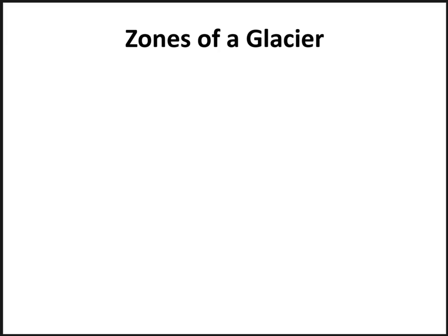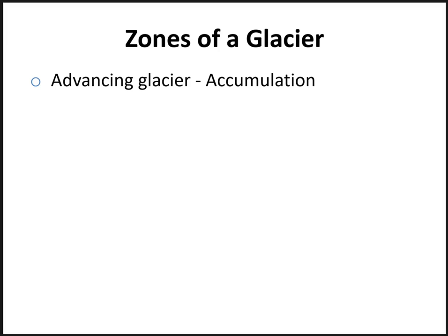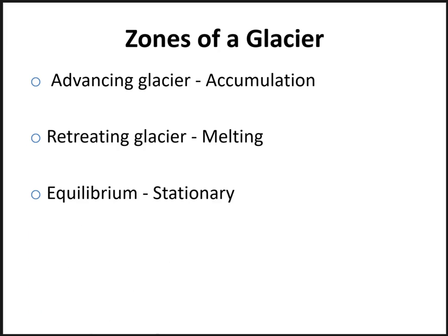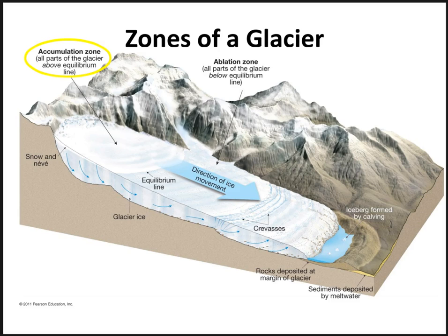There are three zones of the glacier you should know: the zone of accumulation, the ablation zone — which is the zone of melting — and the equilibrium line. When you get more accumulation of snow than melting, the glacier grows. When there's more melting than accumulation, the glacier retreats. When melting and accumulation equal each other, the glacier is stationary. The zone of accumulation is where new snow each year exceeds what's lost; the zone of ablation is where loss of ice mass is greater than accumulation; and the equilibrium line is where accumulation exactly balances ablation.